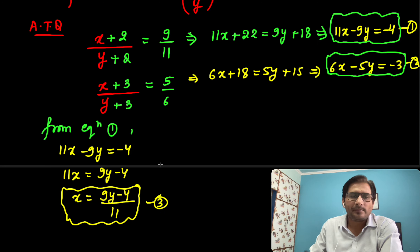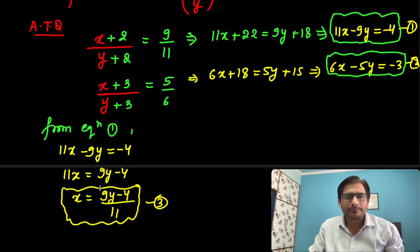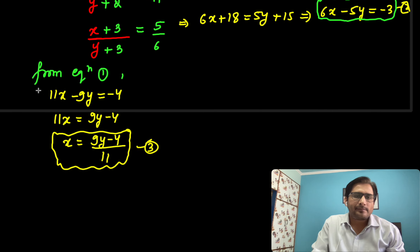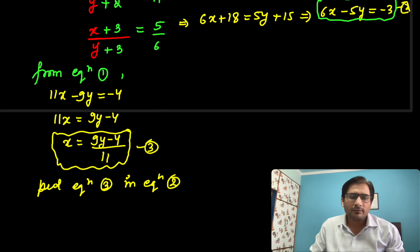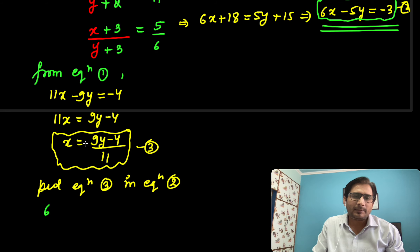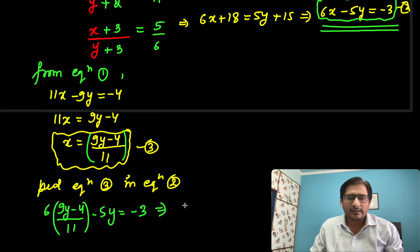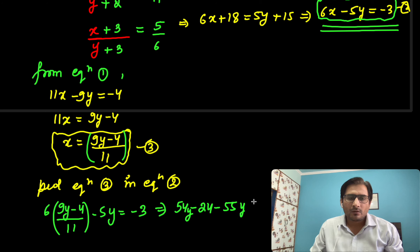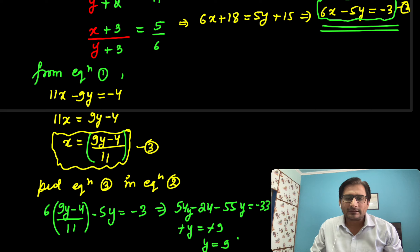Now let us put Equation 3 into Equation 2. Equation 2 is 6x − 5y = −3, so at the place of x I replace it with (9y − 4) by 11. Solving this: 6 times (9y − 4) over 11 minus 5y equals −3. Multiplying out gives 54y − 24 − 55y = −33, so −y = −33 + 24 = −9, meaning y is equal to 9.